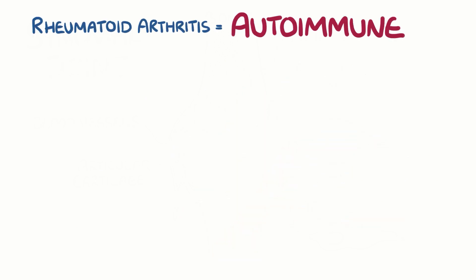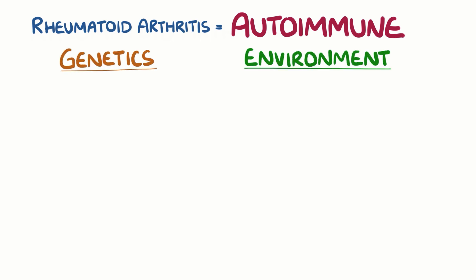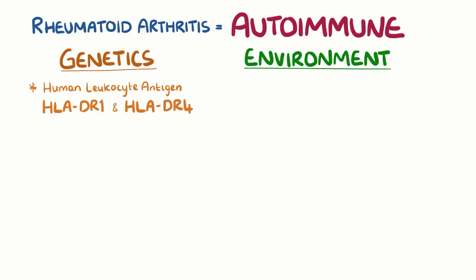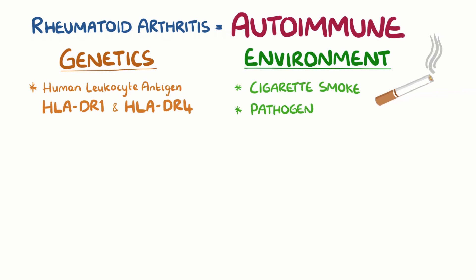Rheumatoid arthritis is an autoimmune process that's typically triggered by an interaction between a genetic factor and the environment. For example, a person with a certain gene for an immune protein, like human leukocyte antigen HLA-DR1 and HLA-DR4, might develop rheumatoid arthritis after getting exposed to something in the environment, like cigarette smoke or a specific pathogen, like a bacteria that lives in the intestines.